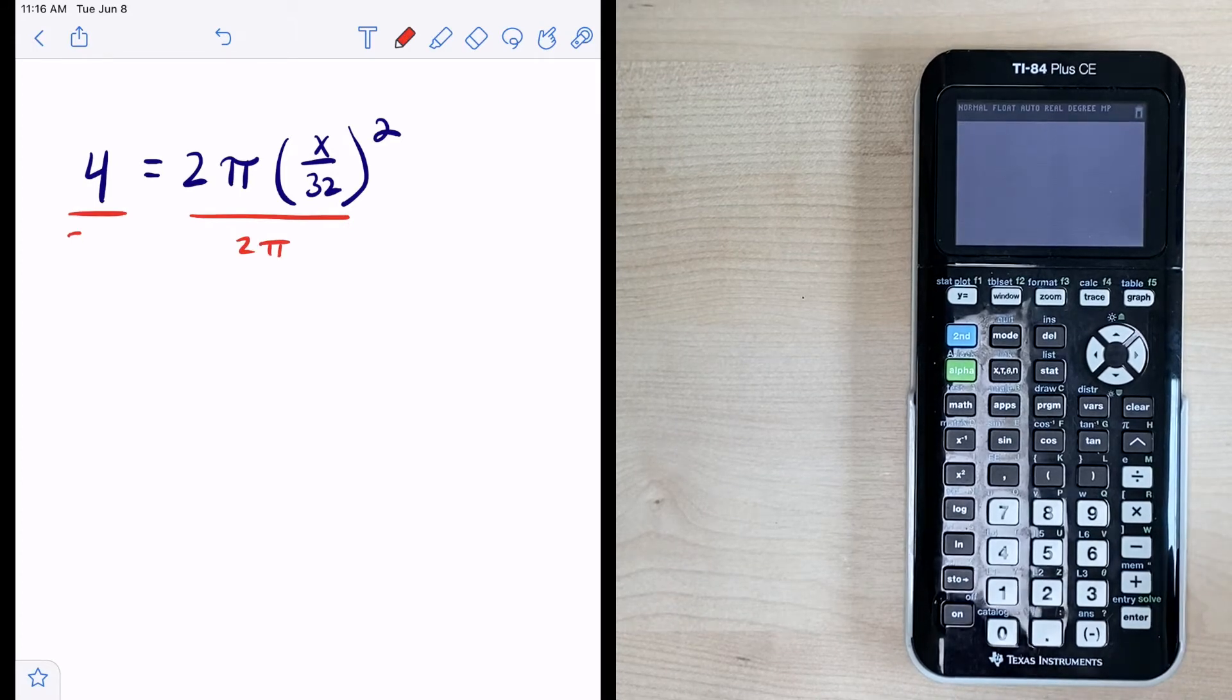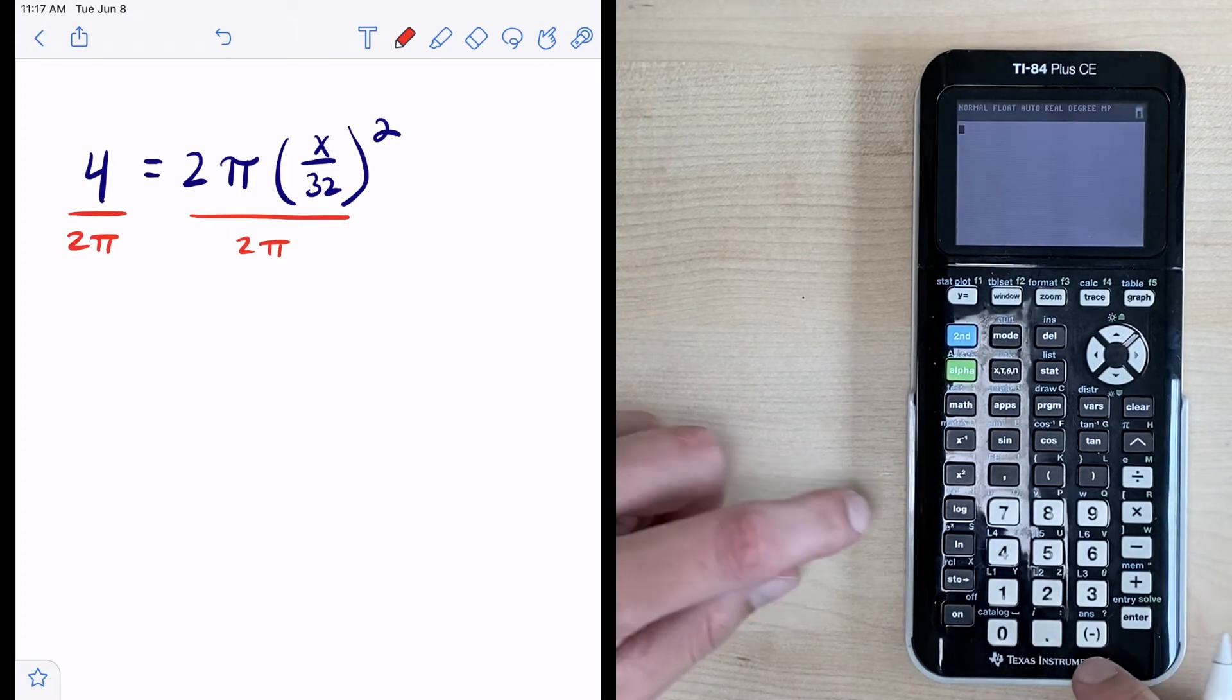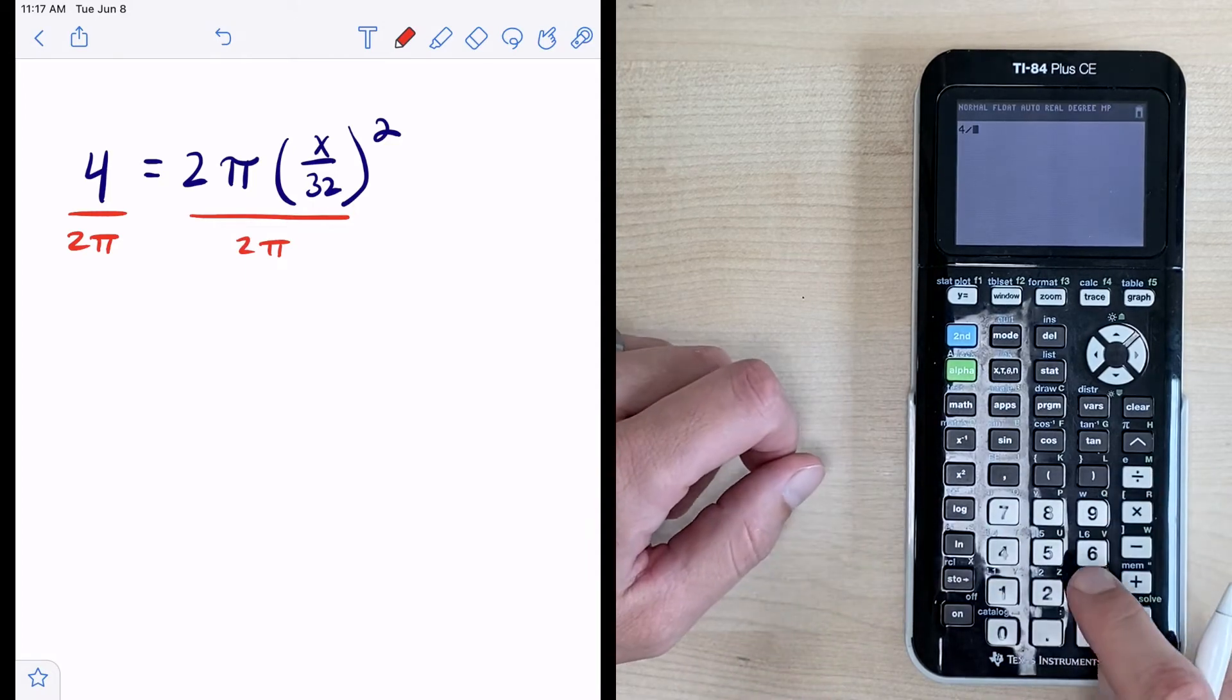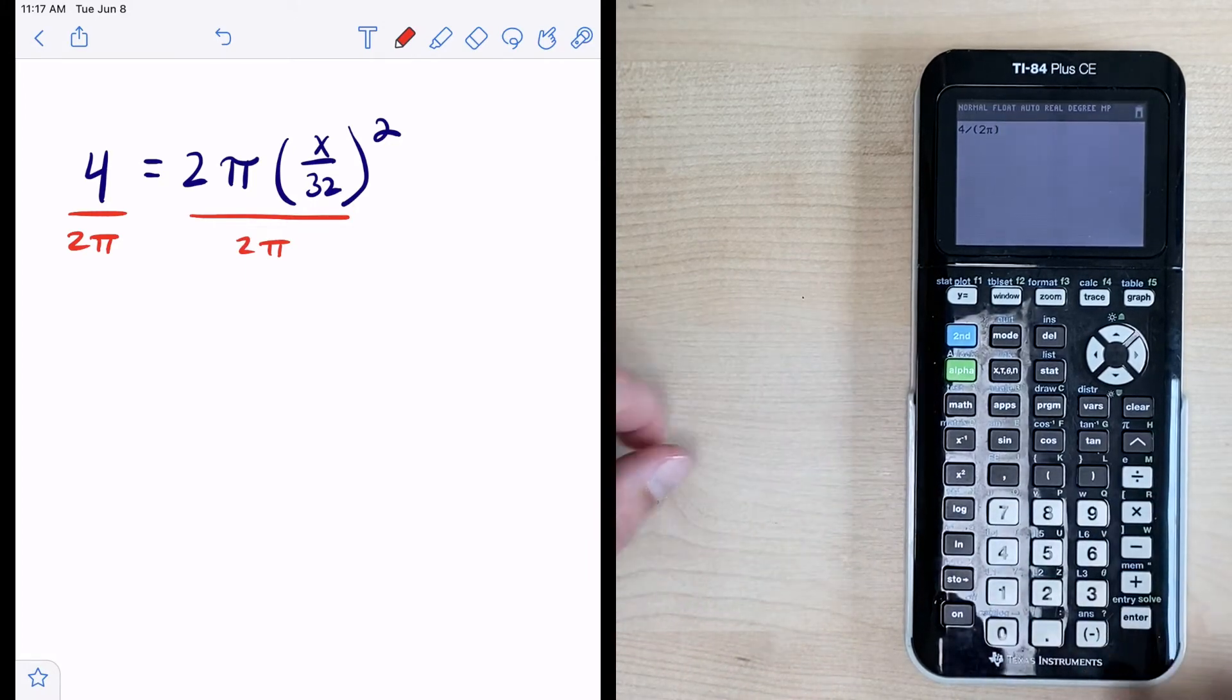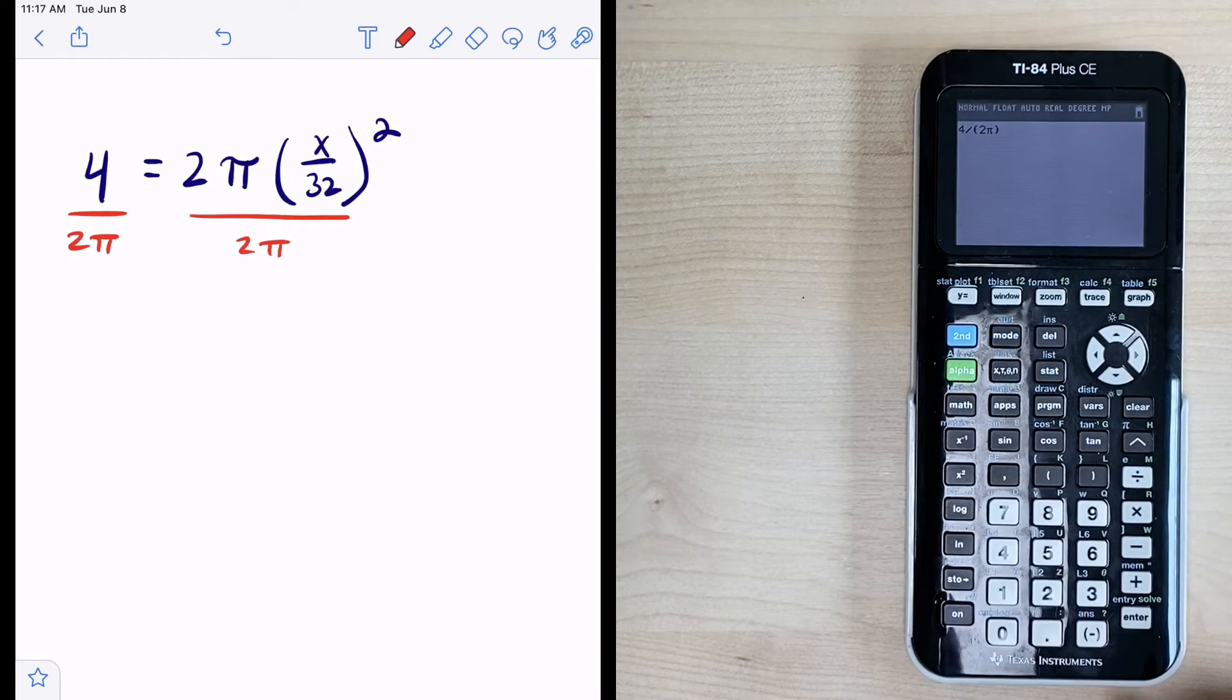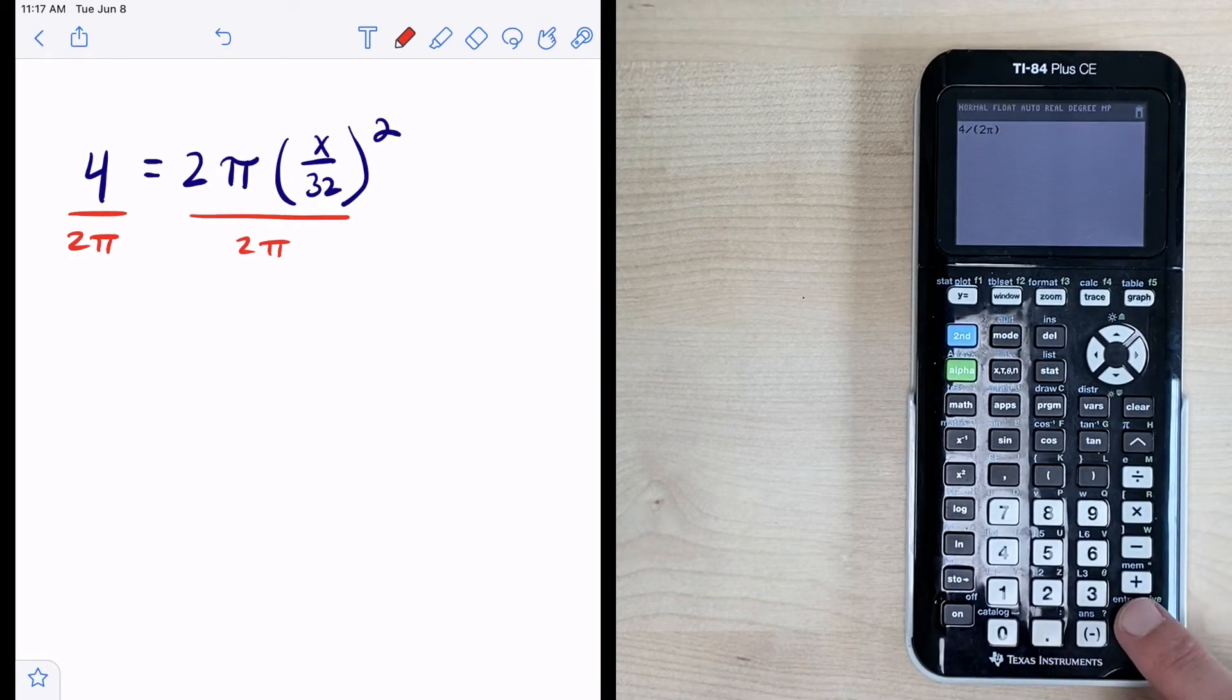Okay so now we can simplify this or you can do the division. So if we do this we can do 4 divided by and when you're dividing by 2π or dividing by any number of π go ahead and put 2π in parentheses there. Okay now we hit enter.